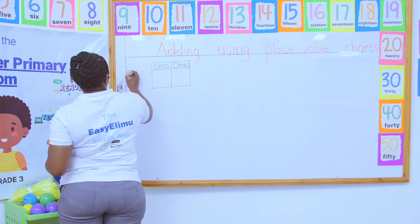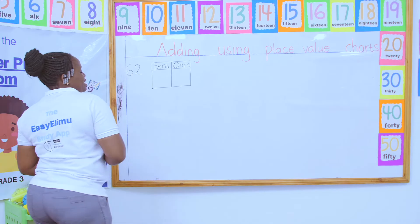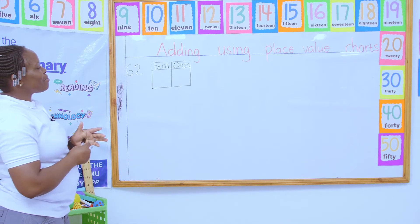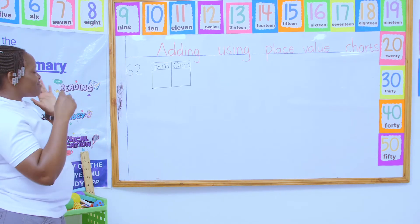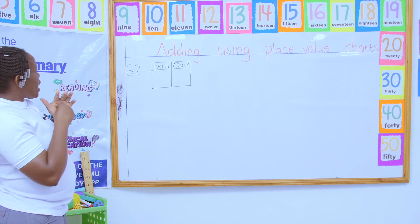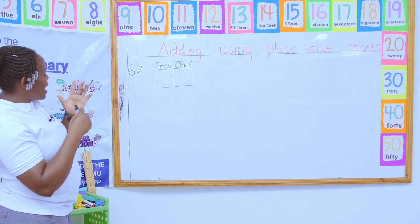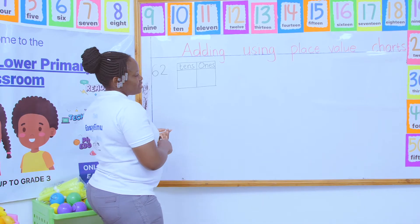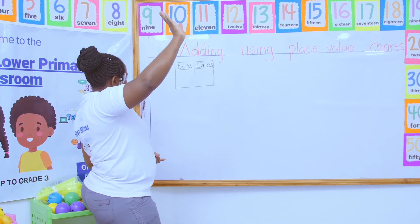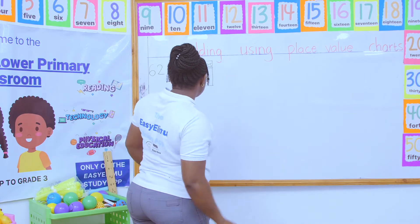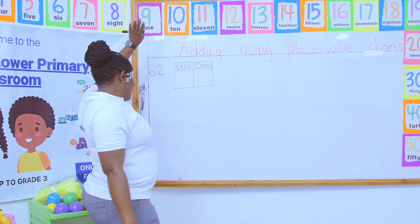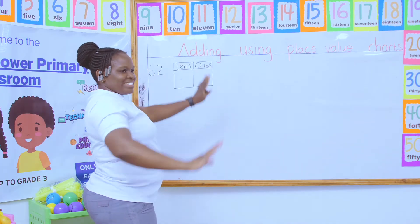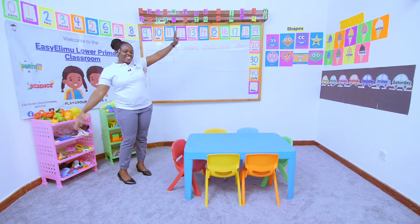When I was told to represent 62 on the place value chart, rule number one: first identify where the ones are and where the tens are. The song says all the ones on the right hand, all the tens on the left hand — ones, tens, ones, tens.